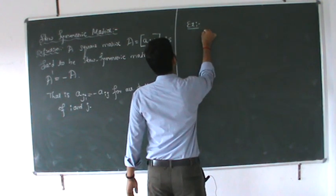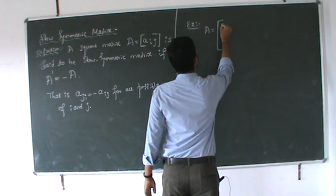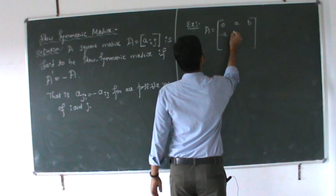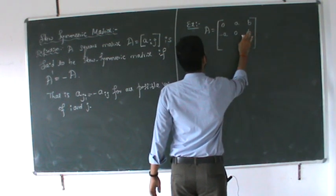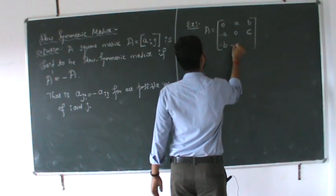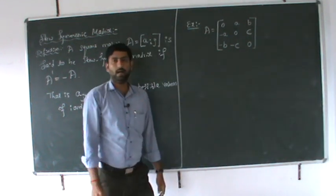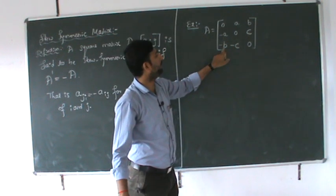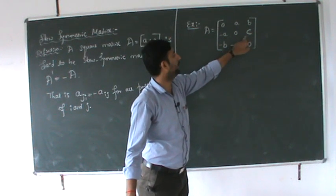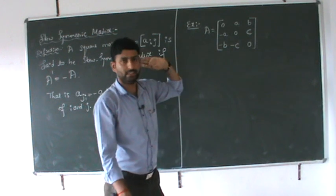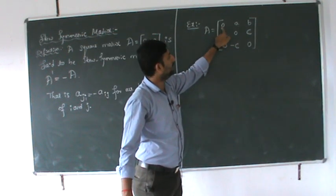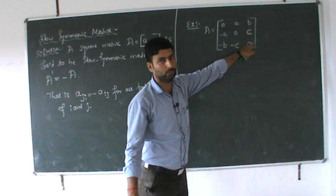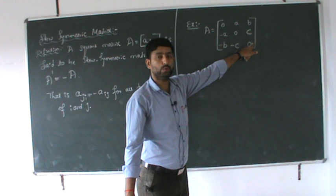Example: A is equal to [0, a, b; minus a, 0, c; minus b, minus c, 0]. All the diagonal elements are 0. In a skew-symmetric matrix, the diagonal elements are always 0. Here a has a positive sign and minus a on the other side; b has a positive sign and minus b; c has a positive sign and minus c.